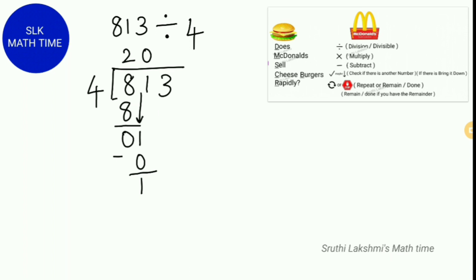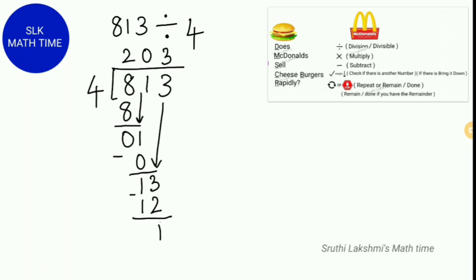Next, we check if there is another number — there is, we have 3 — so we bring down 3. We see how many 4s can fit in 13: three 4s can fit in 13. So we write 3, then multiply 4 times 3 and get 12. So 13 minus 12 is 1. The remainder is 1 and 203 is the quotient.